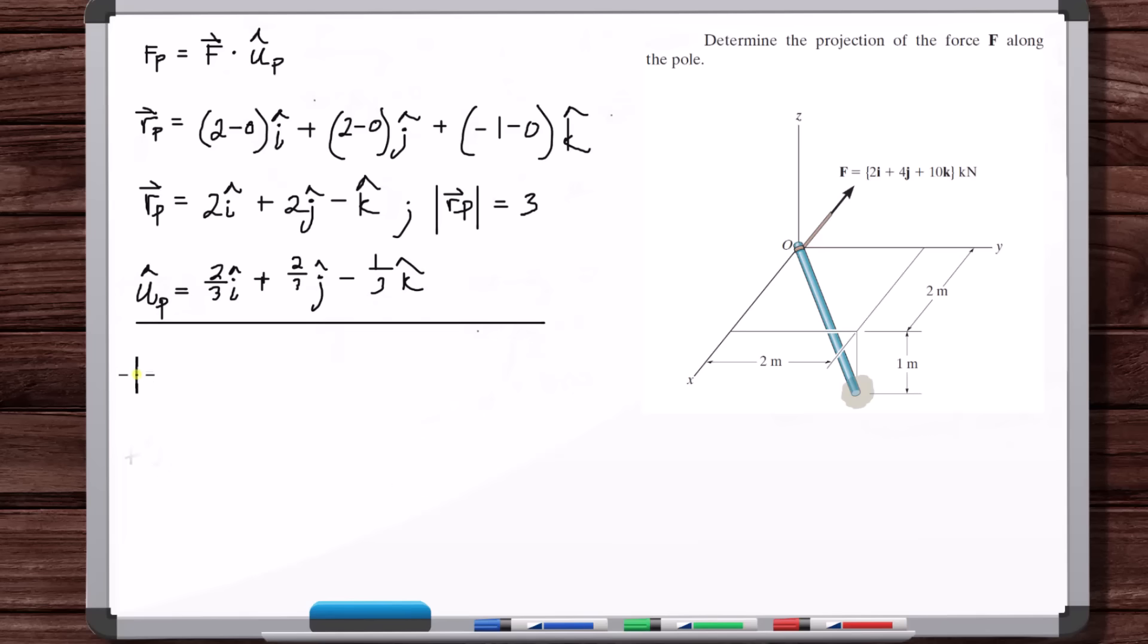So now, Fp, we just dot this, this F, with Up. So how do we take the dot product? Well, that's easy. We'll say 2 times 2/3 plus 4 times 2/3 minus 10 times 1/3.